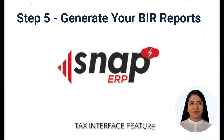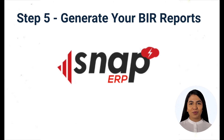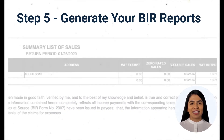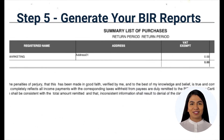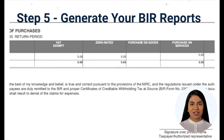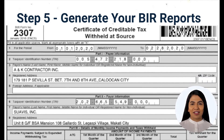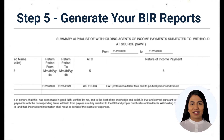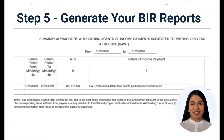Step 5: Run the tax interface module of Snap ERP and generate all BIR reporting requirements such as summary list of sales, summary list of purchases, Form 2307, summary alpha list of withholding tax agents, and their corresponding DAT files required in BIR computerized accounting software.